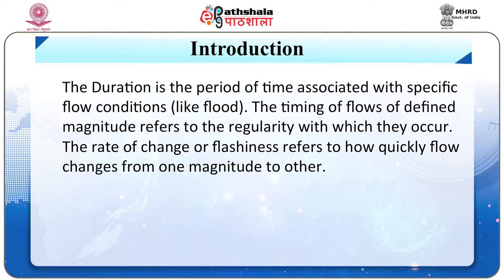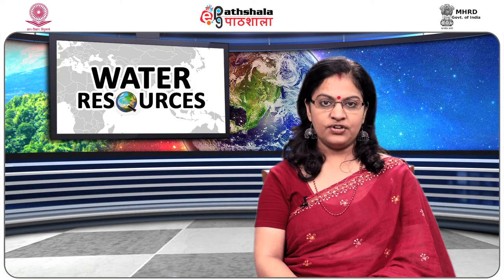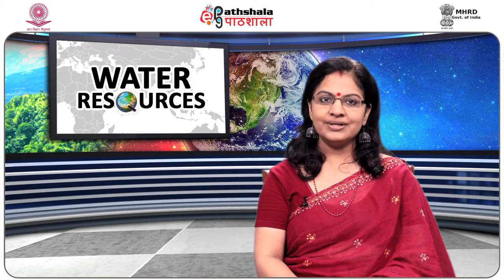The timing of flows of defined magnitude refers to the regularity with which they occur. The rate of change, or flashiness, refers to how quickly flow changes from one magnitude to another. Now let's discuss the classification of river regimes.